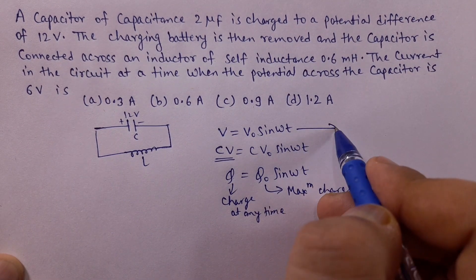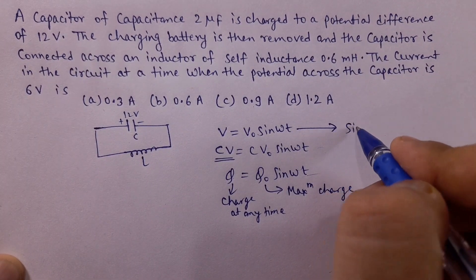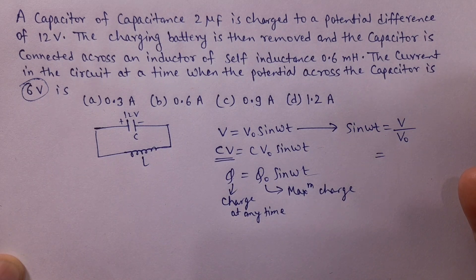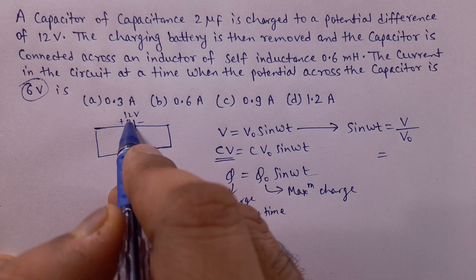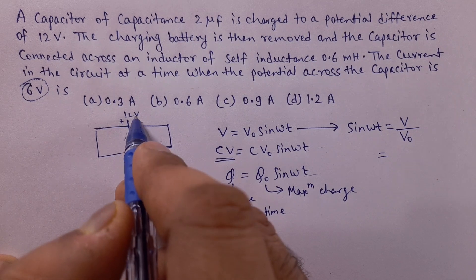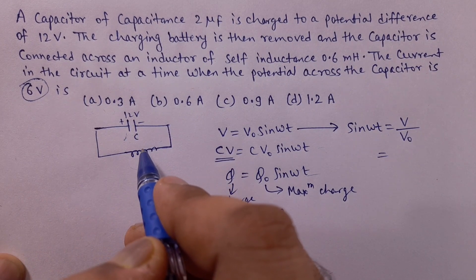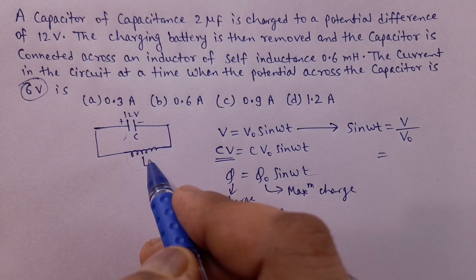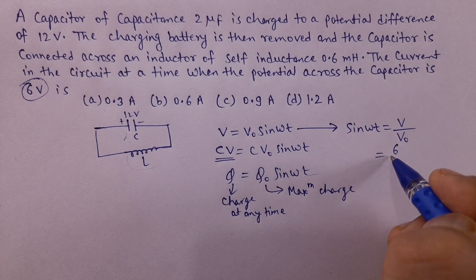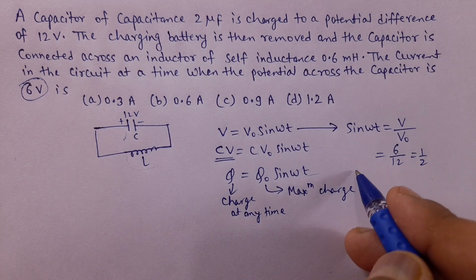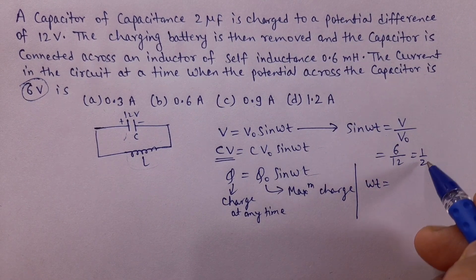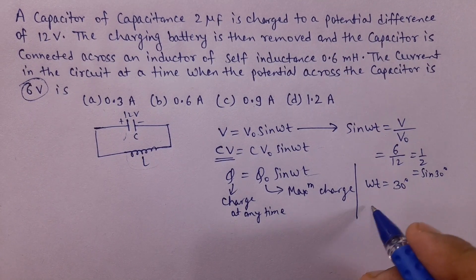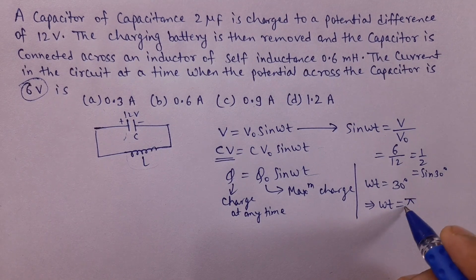So इस formula से sin(ωt) का value निकालेंगे: that is equal to V / V₀. V कितना दिया है? यहाँ पर 6 volt. V₀ initial value 12V है. तो sin(ωt) = 6/12 = 1/2. Sine का कौन सा value 1/2 देता है? That is sin 30°. So ωt = 30° means π/6.